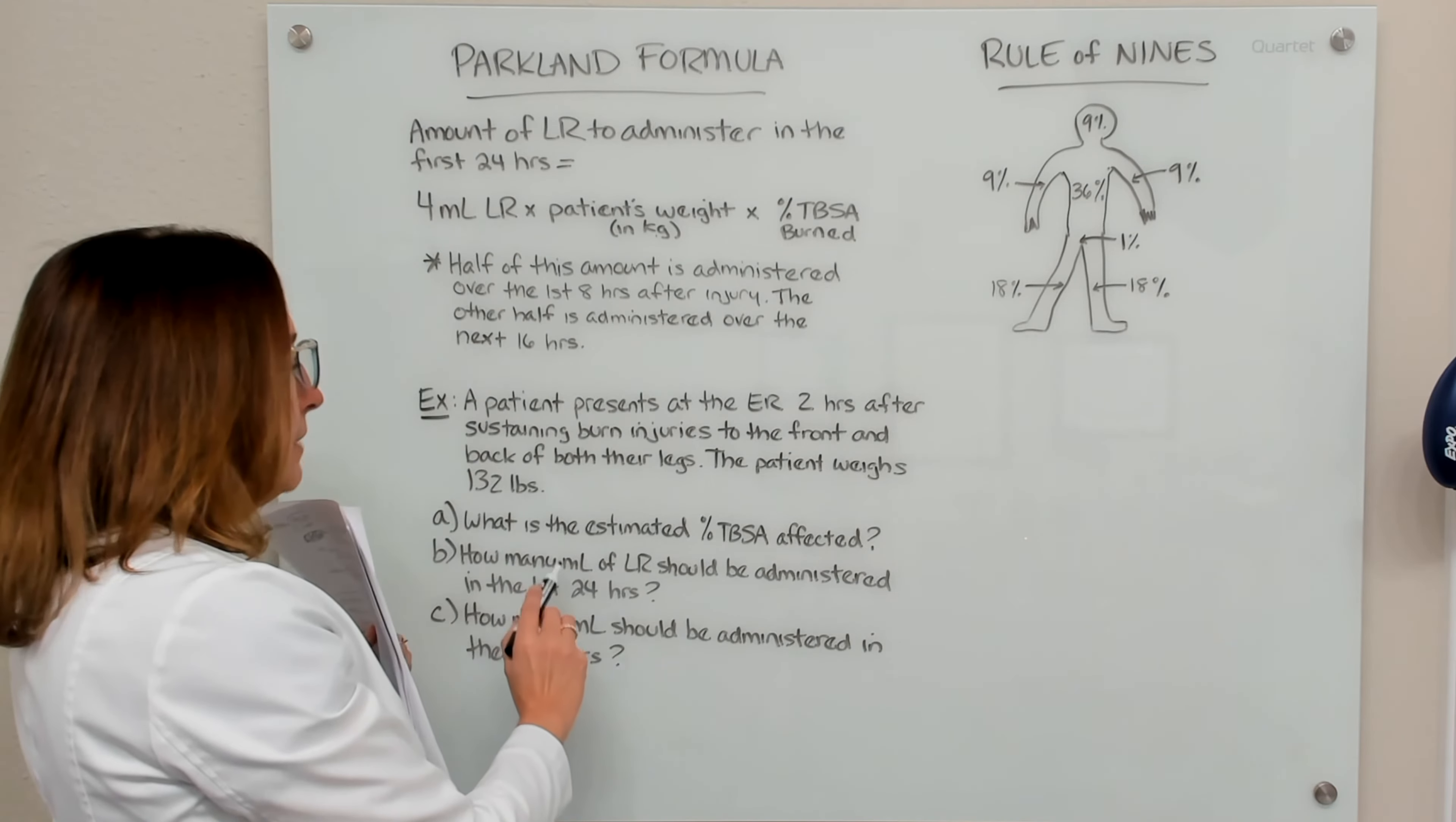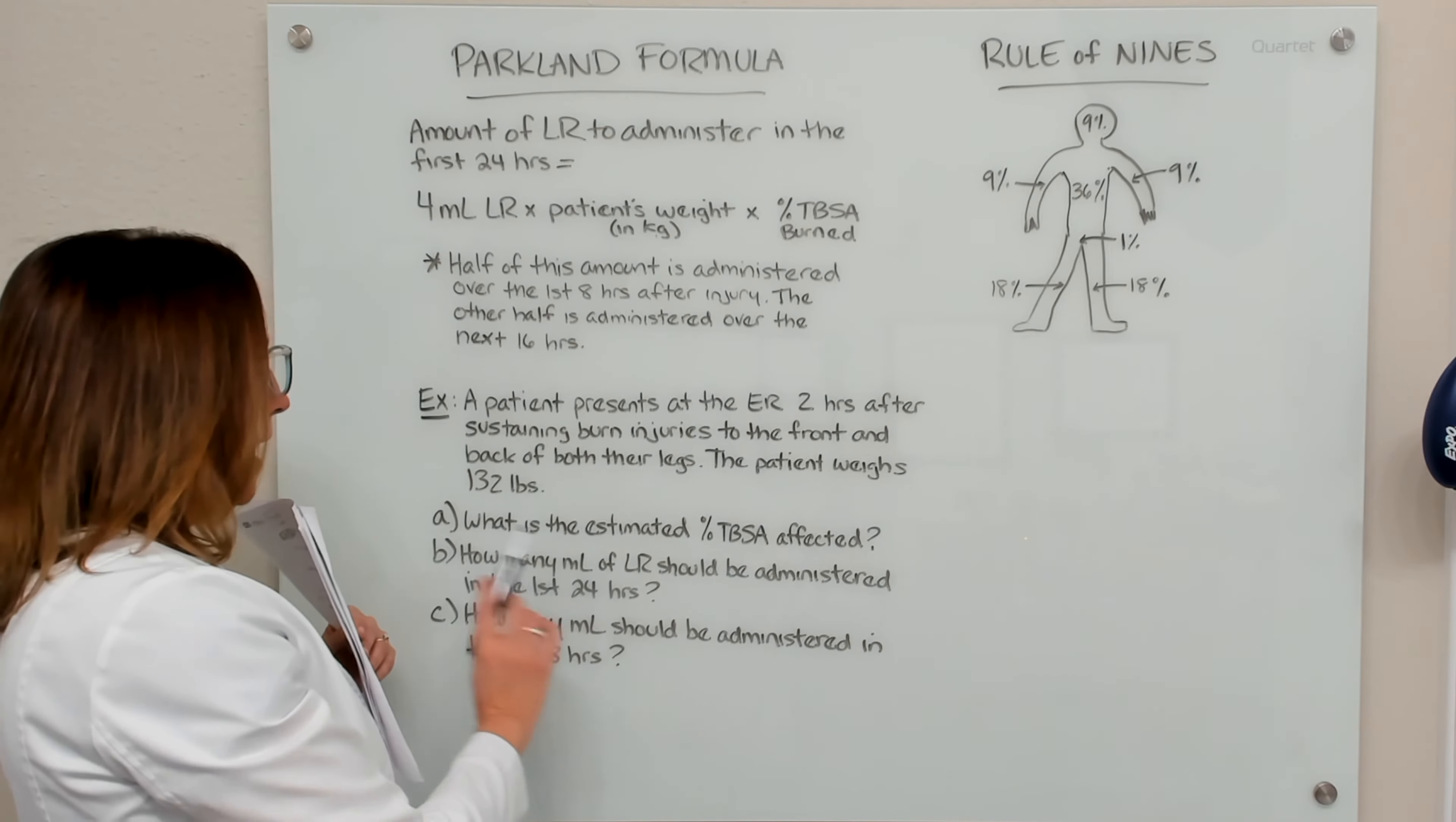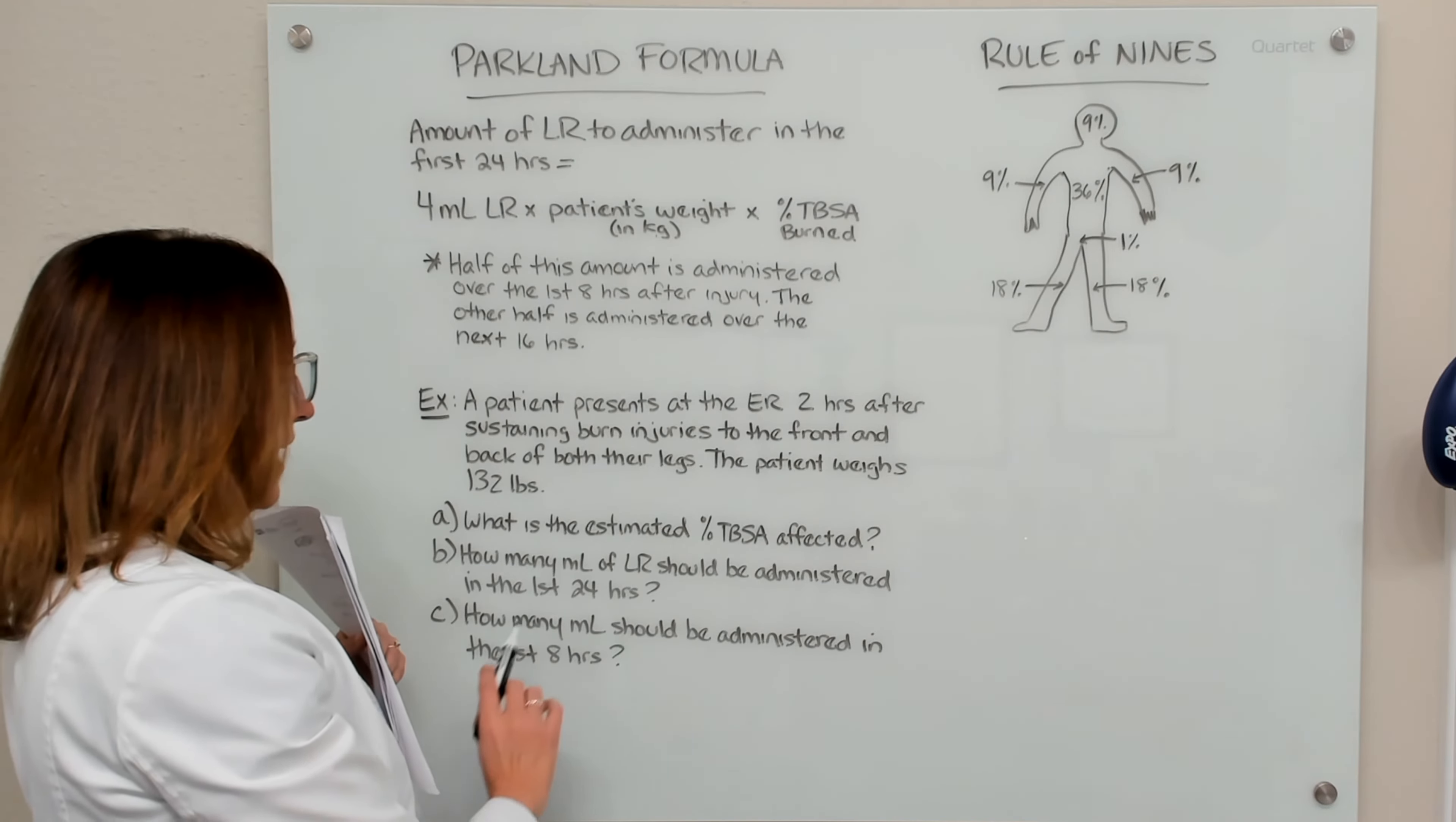what is the estimated percent TBSA affected? B, how many milliliters of lactated ringers should be administered in the first 24 hours? And C, how many milliliters should be administered in the first eight hours?